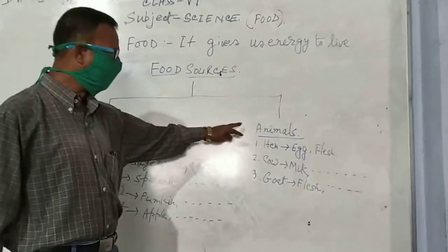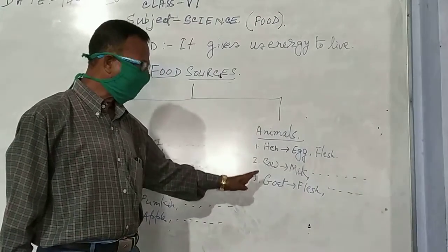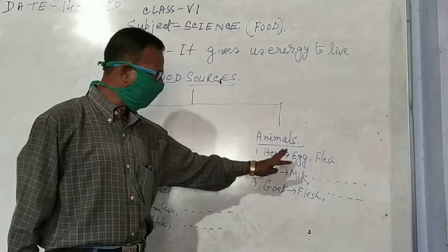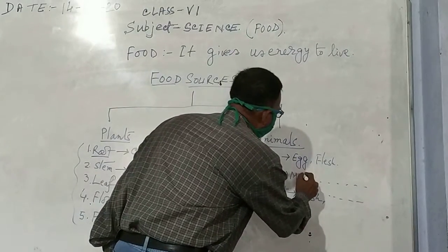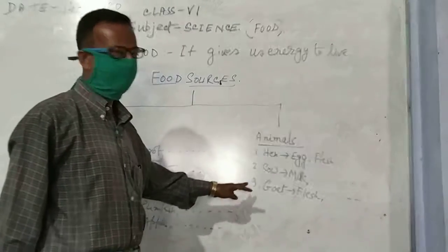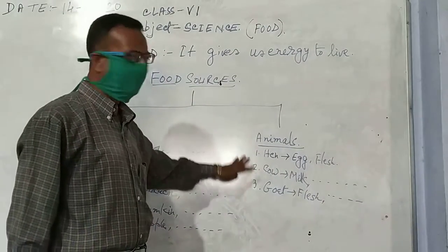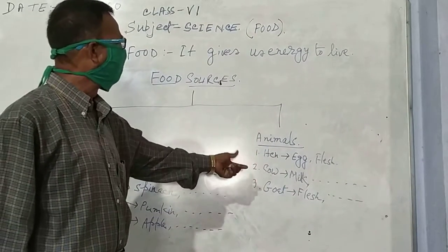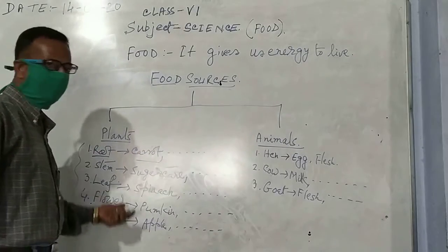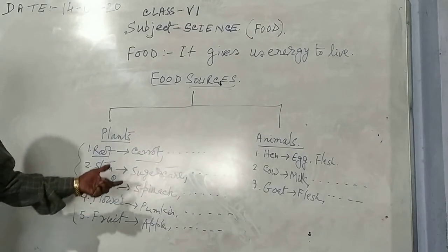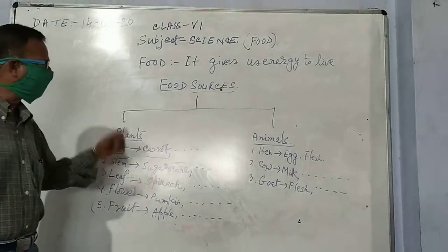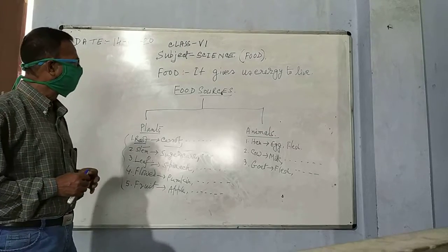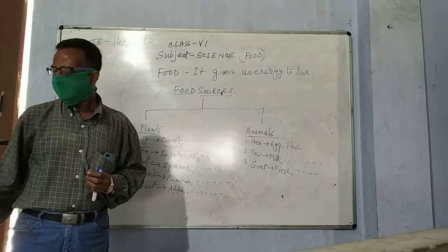So various animals, from various animals we take various parts, egg, meat, etc. This is the food sources chapter where you get your food value and food habitat. There are various food habits in various provinces that should be noted in your copy.